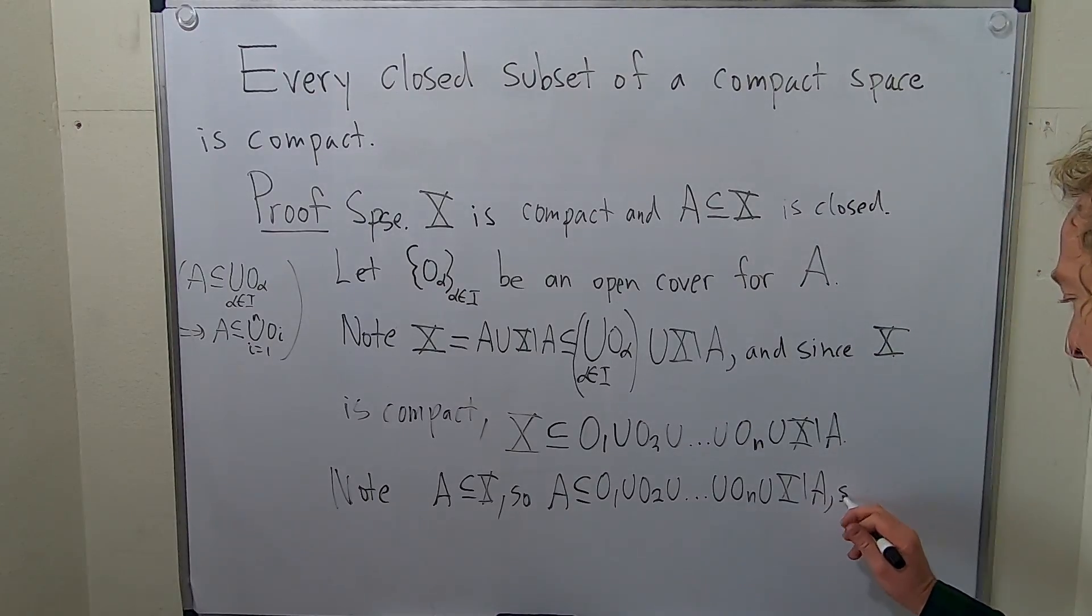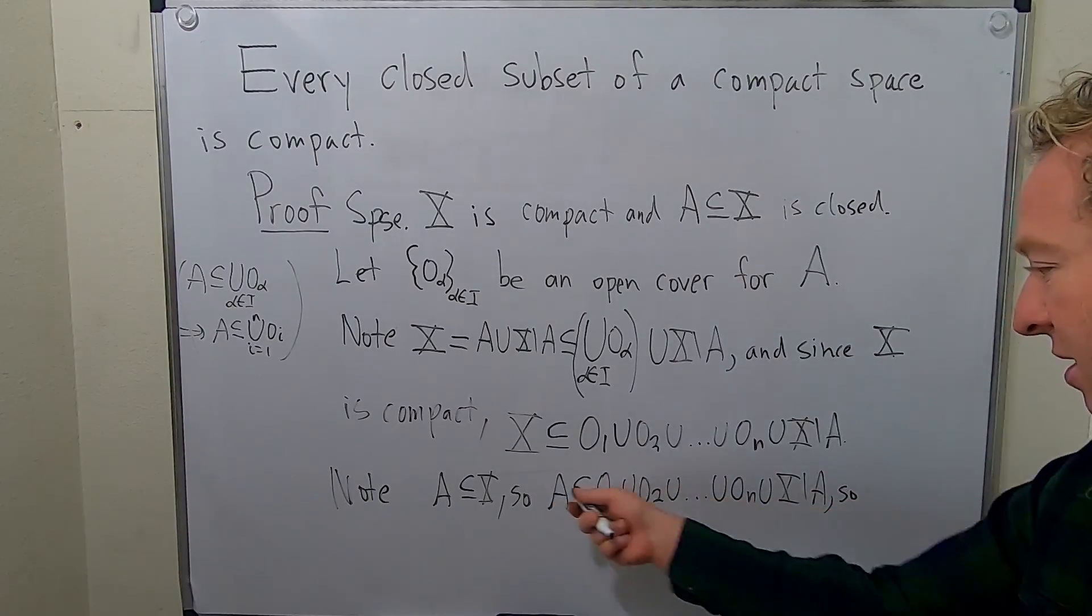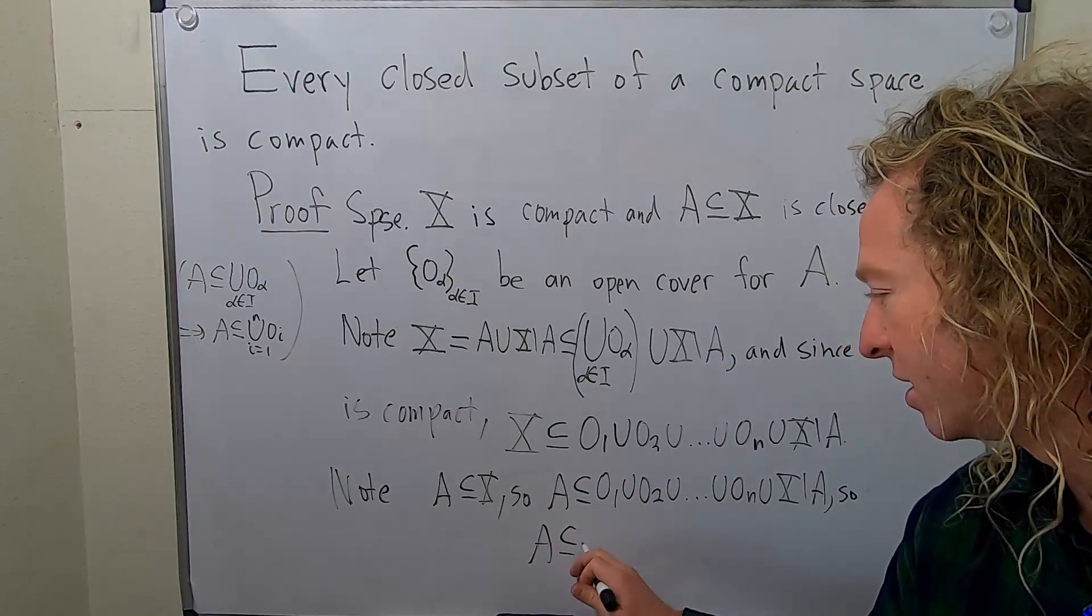So in particular, because these are, if you intersect these, it's empty. So in particular, A is contained in just these.